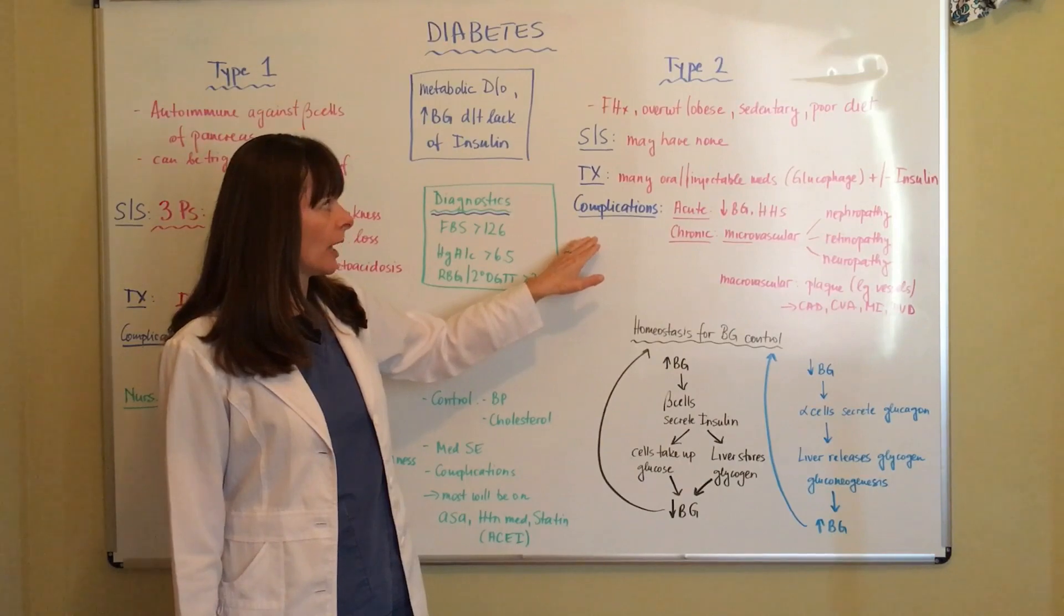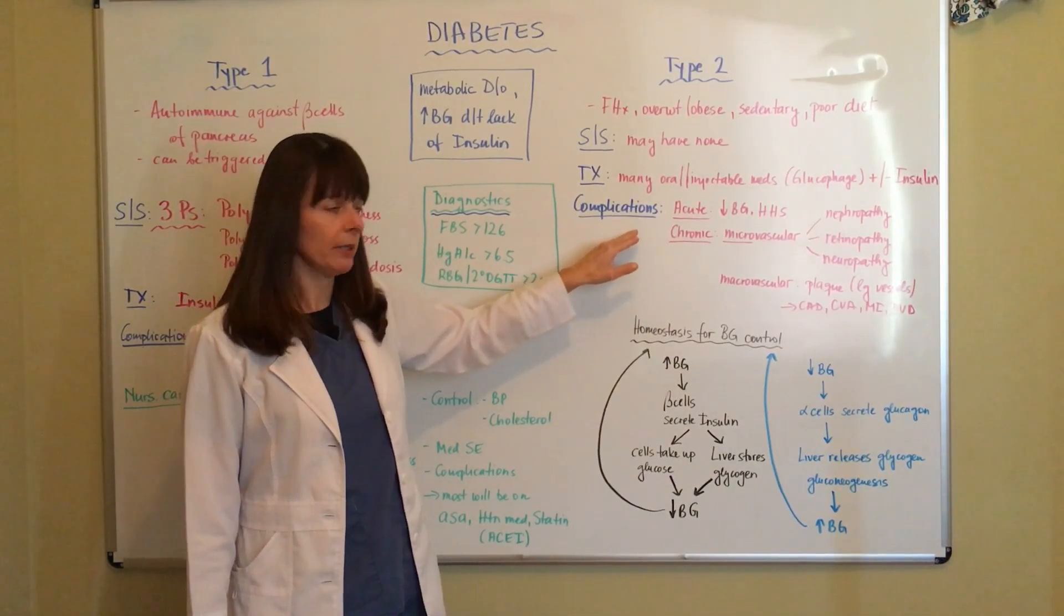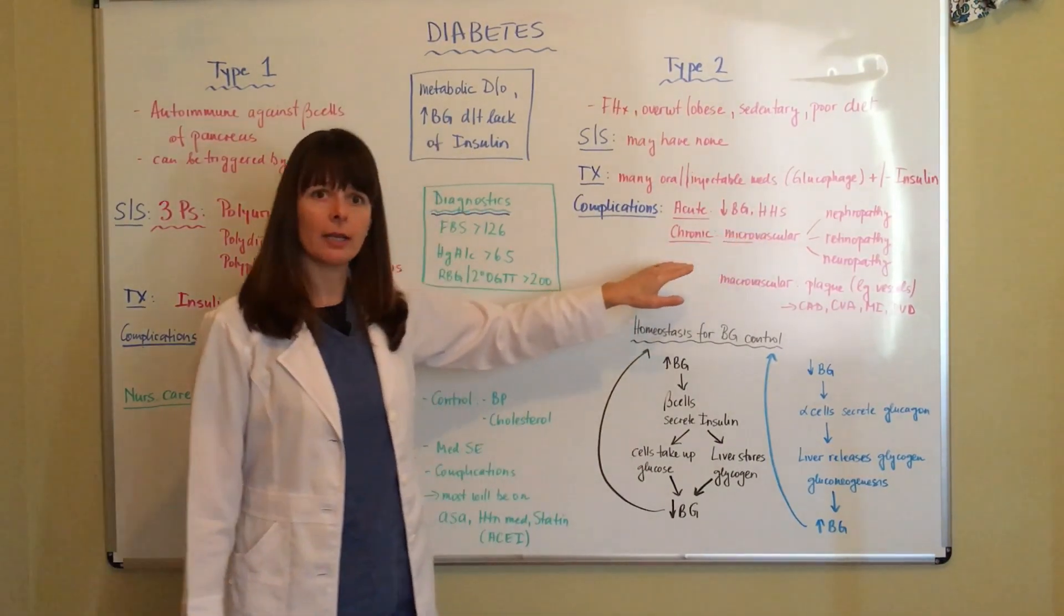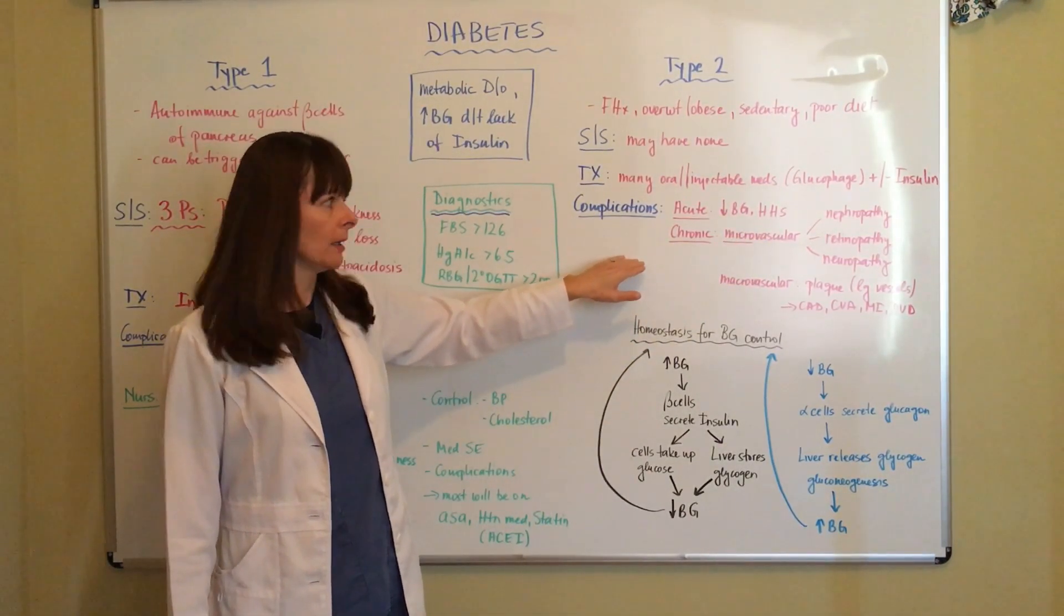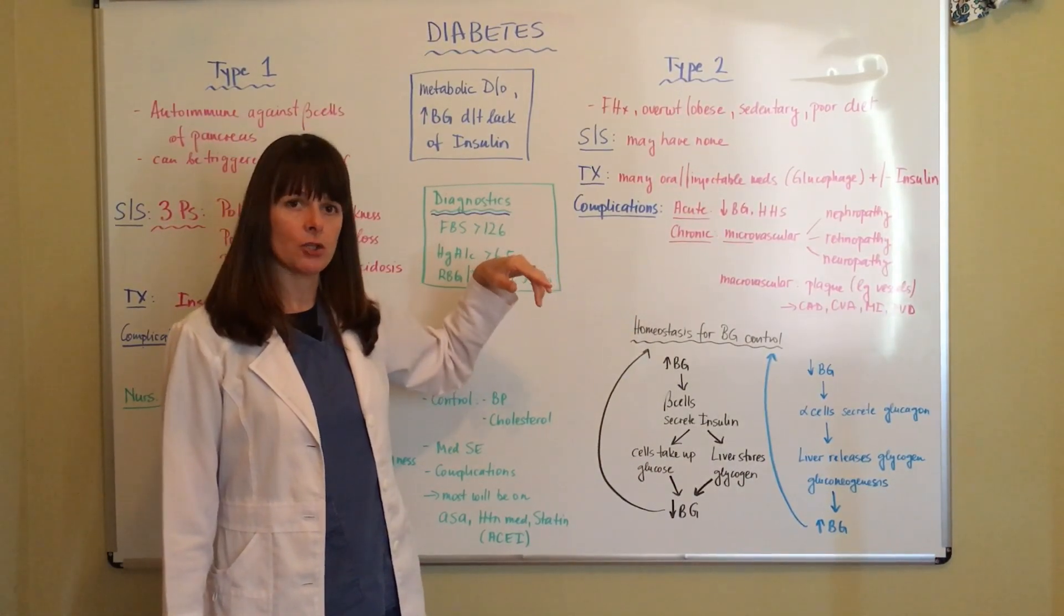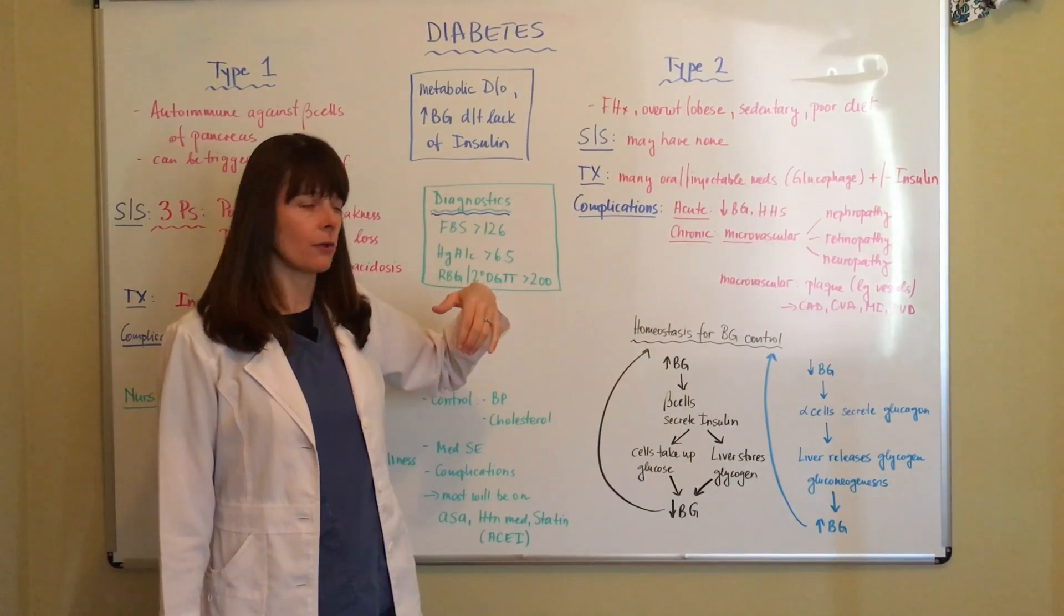Complications for acute is again hypoglycemia, because that certainly can happen. And then HHS, hyperosmotic hyperglycemic syndrome. Again, watch the video where I compare DKA and HHS and discuss the pathophysiology and treatment of those.